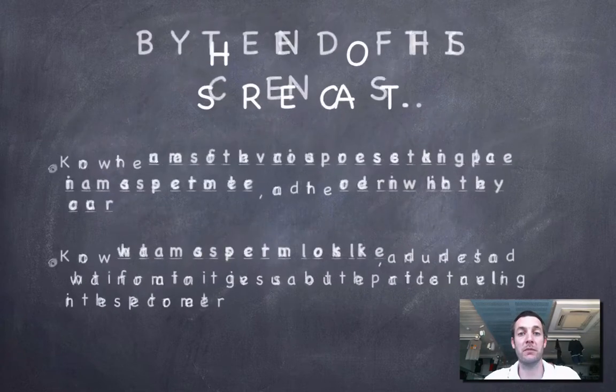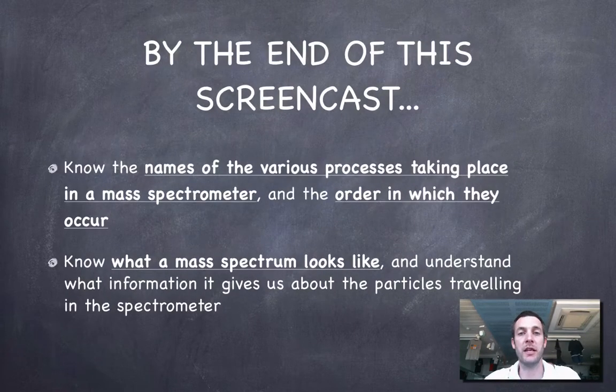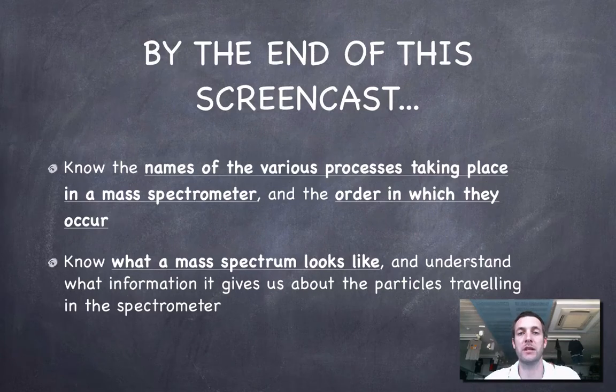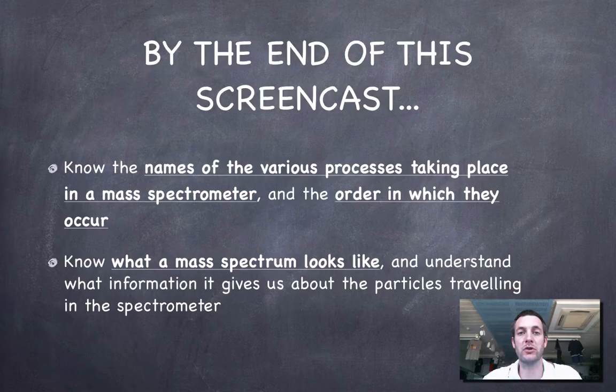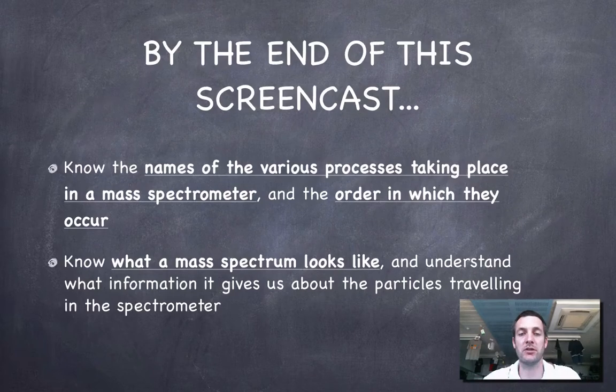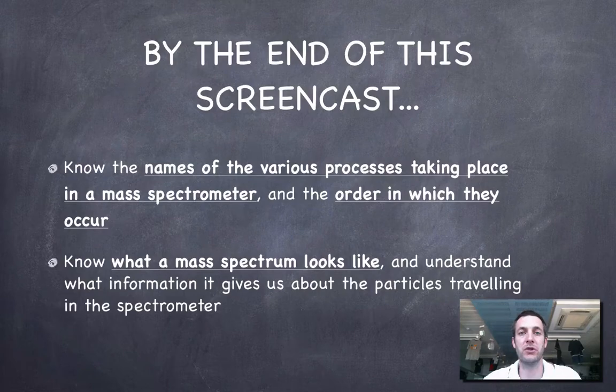And not only for weighing them, but also for seeing how many particles of a particular mass there are in a sample. So what we're going to do in this film is we're going to look at the output that we get from a mass spectrometer, what a mass spectrum looks like, and we're going to look at the workings of a mass spectrometer to see how the processes that are taking place in a mass spectrometer actually lead to this output being produced.